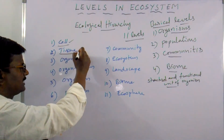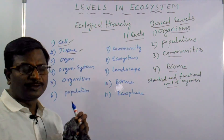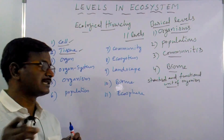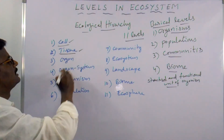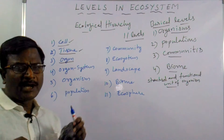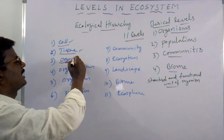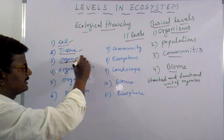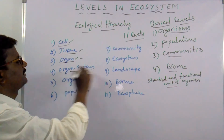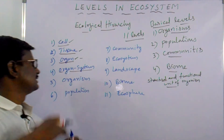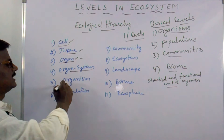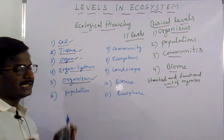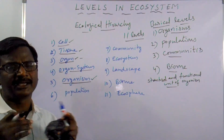The second level of ecological hierarchy is tissue. The group of similar structure and similar function cells forms the tissues. The group of tissues forms the organs, which is the third level. Different organs collectively make the organ system, and these organ systems collectively make the organism. The organism is made up of different types of organ systems.